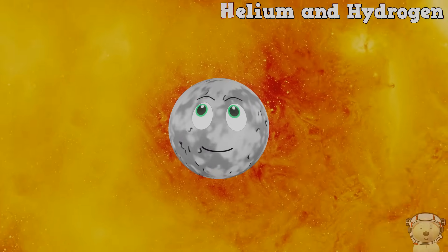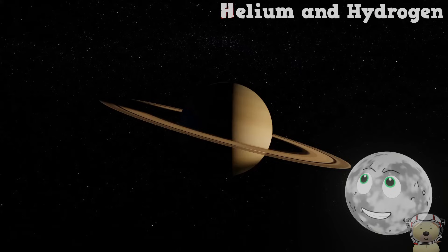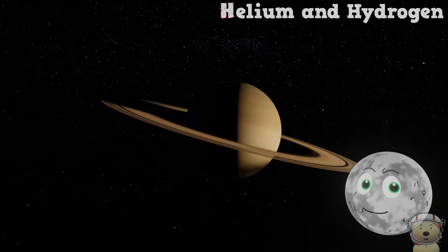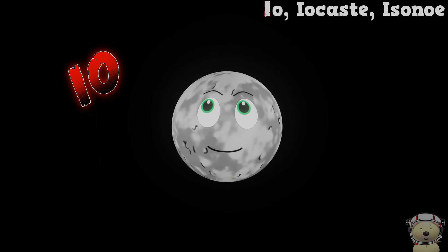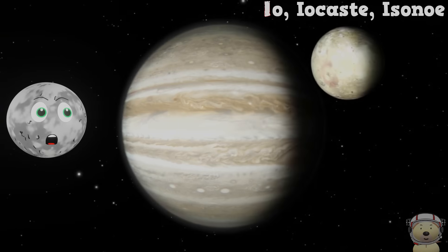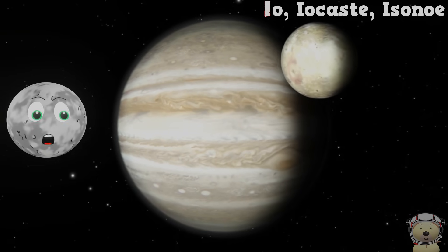H is for helium and hydrogen, gas giants made of this, just like Saturn. I is for Io, Europa, Callisto, three moons of Jupiter, didn't you know?